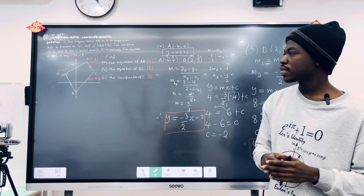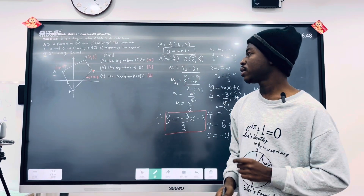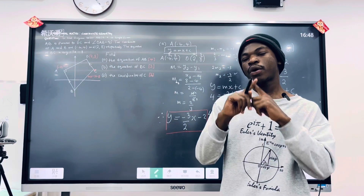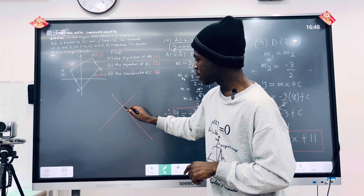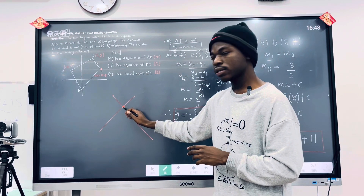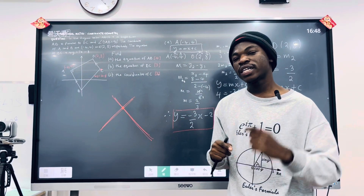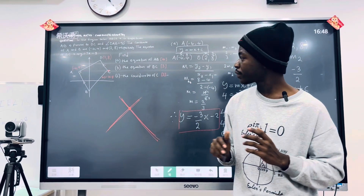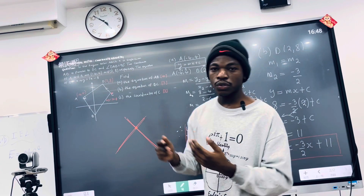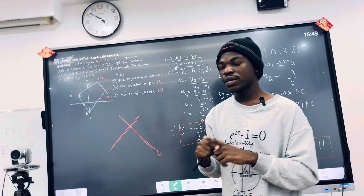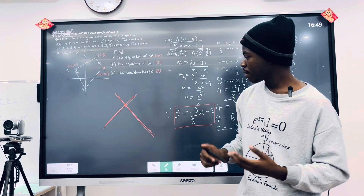The last part asks for the coordinates of C. Point C is the intersection of lines DC and BC. To find the coordinates of an intersection point, we solve the two line equations simultaneously to get the X and Y values.